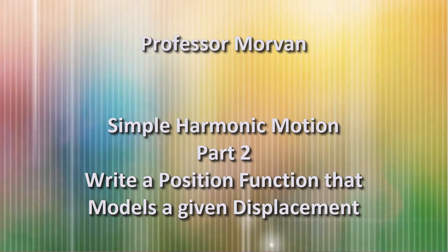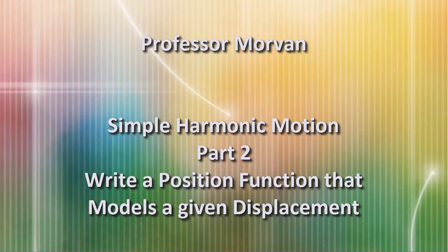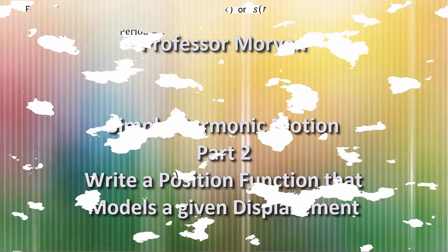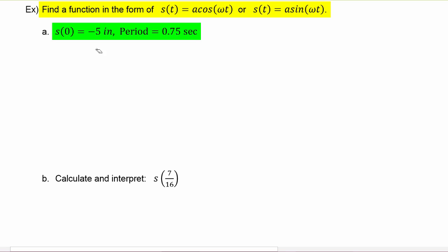In part two of our lesson on simple harmonic motion, you will learn how to write a position function that models a given displacement. In this example, you have to find a function in the form of s(t) = a·cos(ωt) or s(t) = a·sin(ωt), given that s(0) = -5 inches and the period is equal to 0.75 seconds.